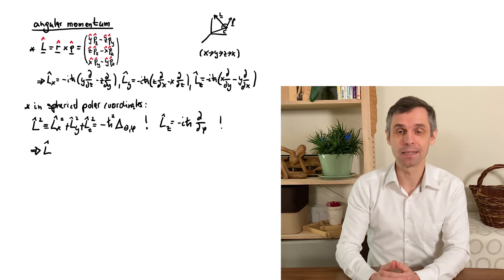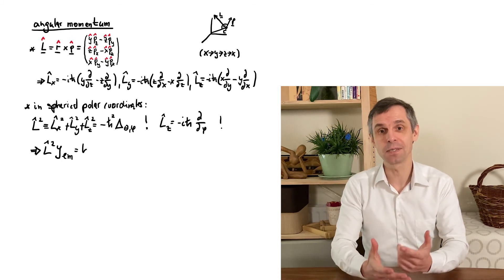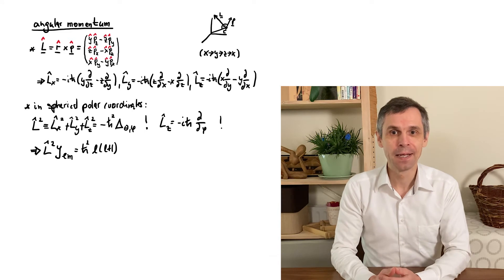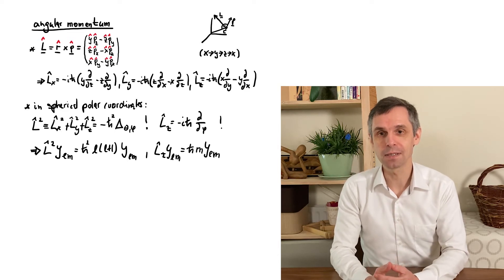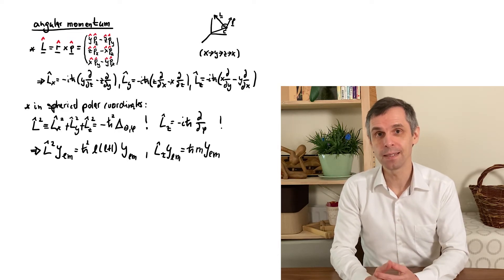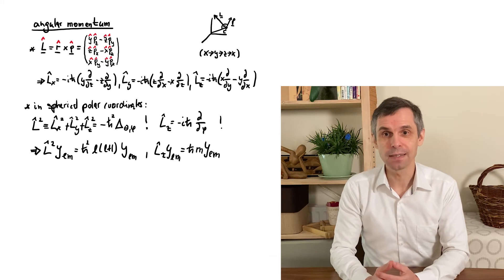This simply implies that the spherical harmonics are eigenfunctions of these two operators. For L squared, that was part of their definition. And for Lz, recall how the angular dependence of phi really just looks like a plane wave in phi, e to the i M phi, so the eigenvalue in there involves M.